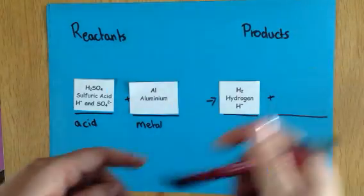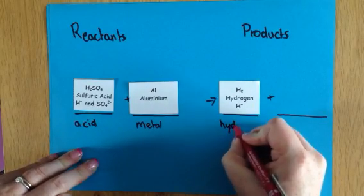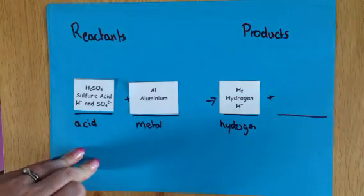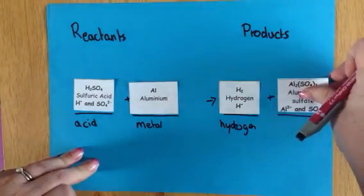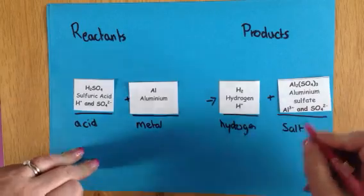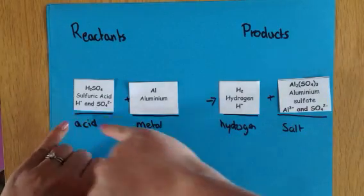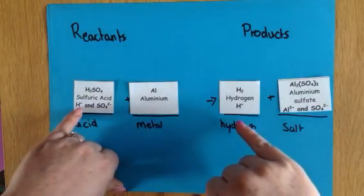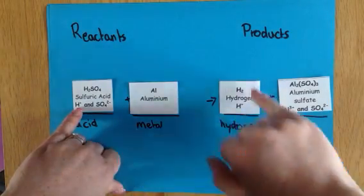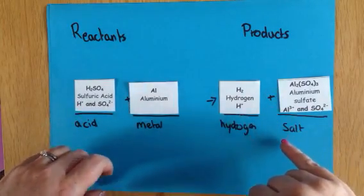It's always good to remember that when we react an acid with a metal we're going to get two products. We're going to get hydrogen — that's going to be a gas — and we're going to get our salt. So what you need to notice is that hydrogen is the ion here and it kind of reacts with itself to form hydrogen gas and that gets evolved off.